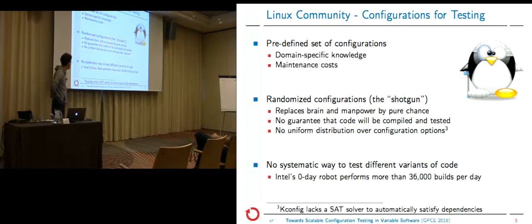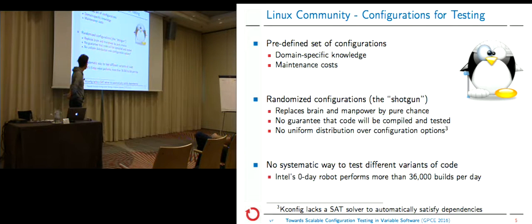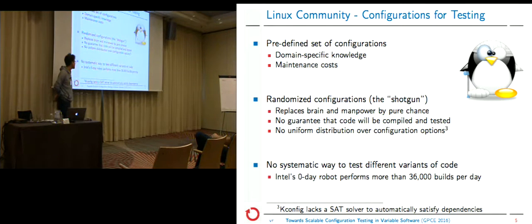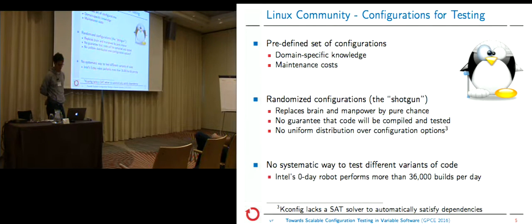This is particularly bad considering that there are some big infrastructures for continuous integration. For example, the Linux zero-day robot has more than 36,000 builds per day. I expect a lot of redundancy in those tests, and this is not systematic.